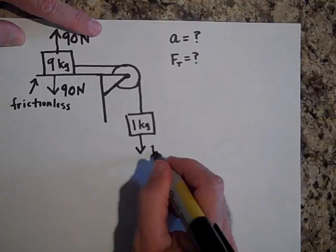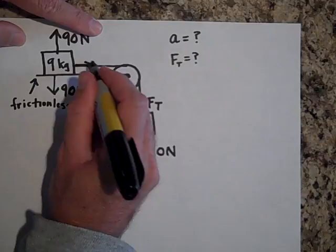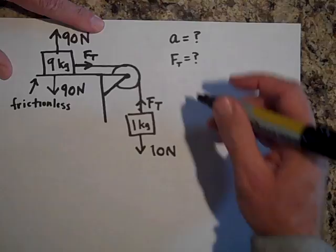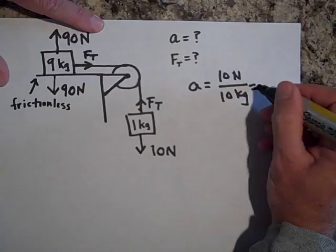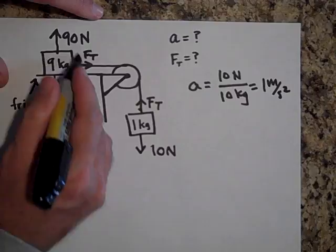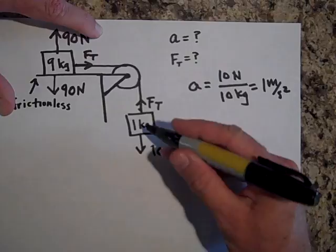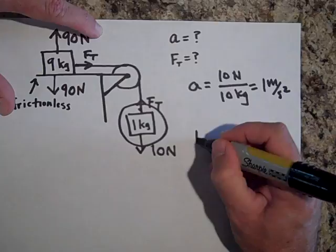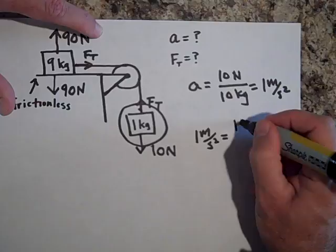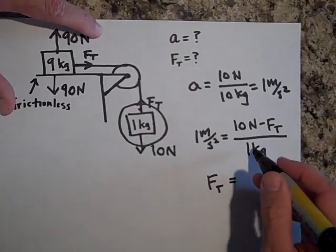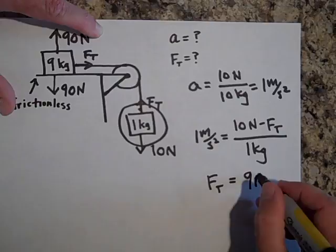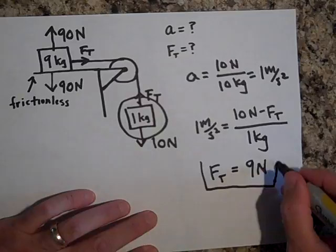The 1 kg block has 10 newtons down. If we look at the whole system, the tension forces cancel as internal forces. So a = 10 N / 10 kg = 1 meter per second squared. To find the tension, tunnel-vision on the 1 kg block: a = (10 N − Ft) / 1 kg, so Ft = 9 newtons. You can verify using the 9 kg block and get the same answer.